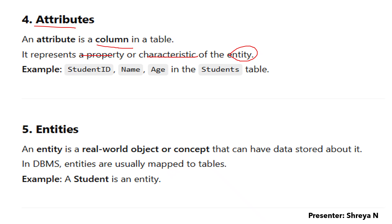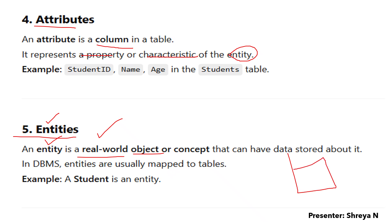The fifth concept is entities. An entity is a real-world object or concept. A student is a real-world concept — we call it an entity. A college, a railway, an airport — these are all real-world entities. Whatever denotes a real-world object, we call it an entity in DBMS. An entity is something that can have data stored about it. In RDBMS, entities are usually mapped to tables — for each entity, a special table is created. So student is an entity, and that completes 2.1.